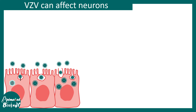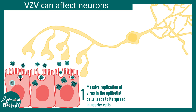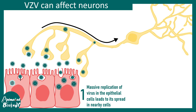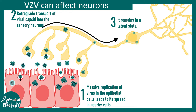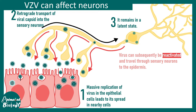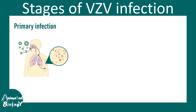Since VZV affects all epithelial cells in the skin, and the skin is innervated by sensory fibers, the virus can travel retrogradely from nerve endings to the cell body. These cell bodies end up in the dorsal root ganglion within the spinal cord, where the virus can remain in a latent state. When required, they can be reactivated and move anterogradely to infect the skin again. The dorsal root ganglion acts as a long-term storage site for the virus.